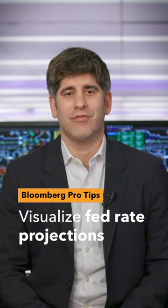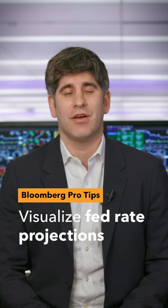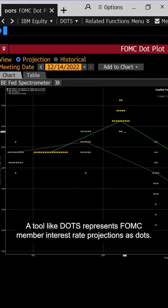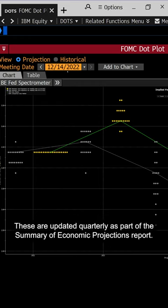I want to show you a useful function for visualizing various projections for the path of the federal funds rate. A tool like DOTS represents FOMC member interest rate projections as dots. These are updated quarterly as part of the Summary of Economic Projections report.